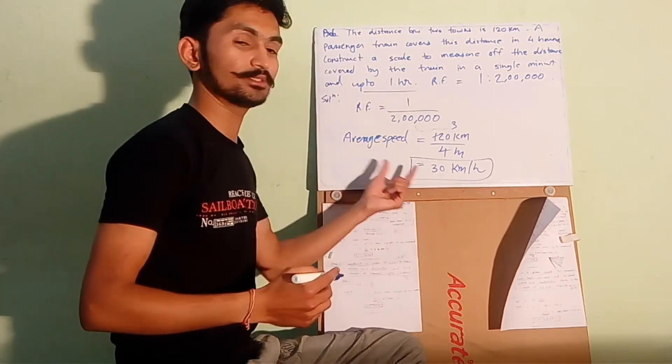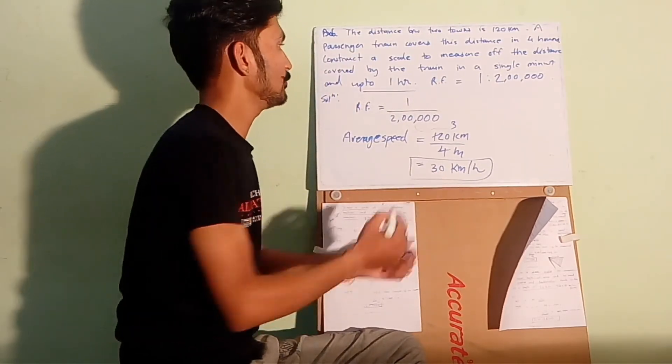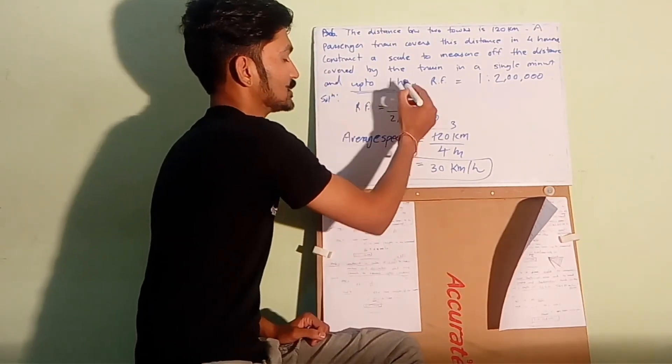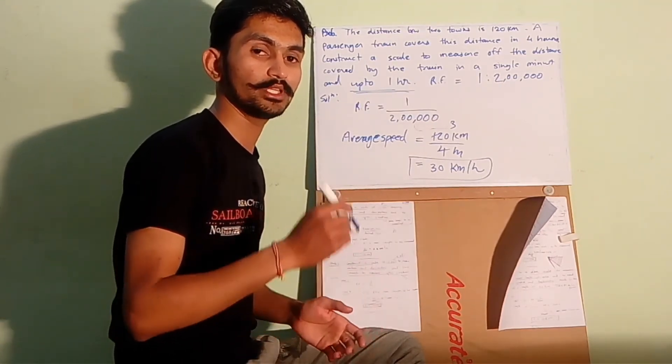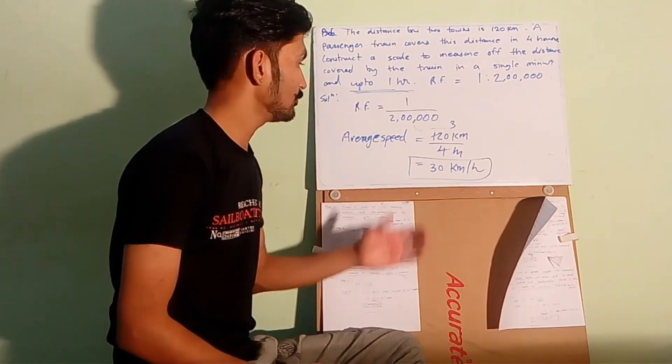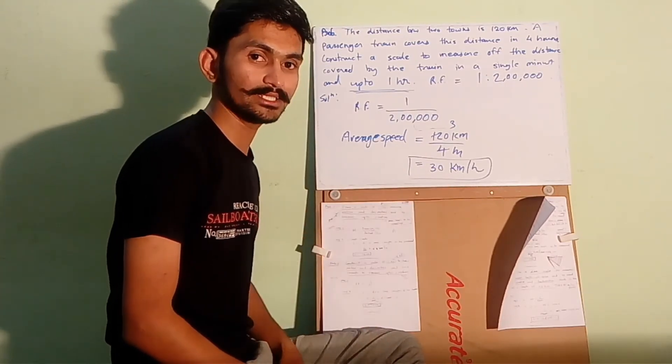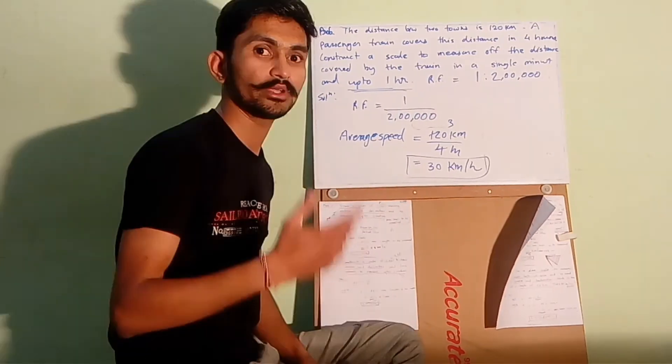So the average speed is 30 km per hour, means the distance covered by the train in 1 hour is 30 km. So 30 km will be the maximum distance to be shown on the scale.